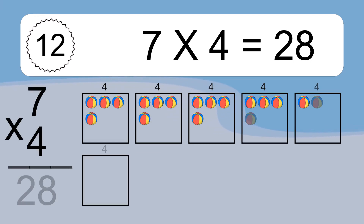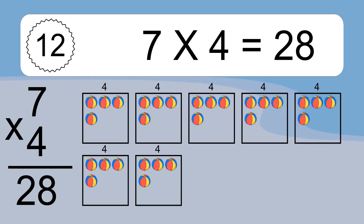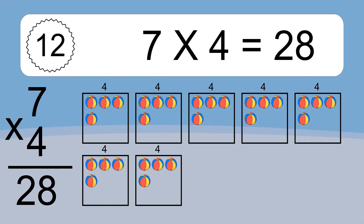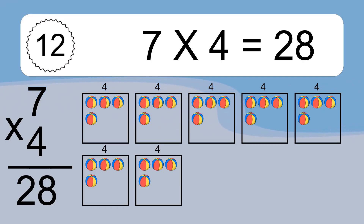7 times 4 equals what? 7 times 4 equals 28. We have 7 boxes, and each box has 4 colorful balls inside. If you count all the balls in all the boxes together, you will have 7 times 4 balls. This equals 28 balls.